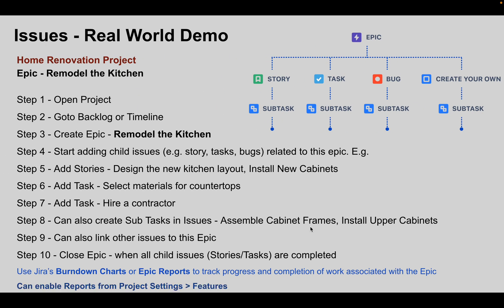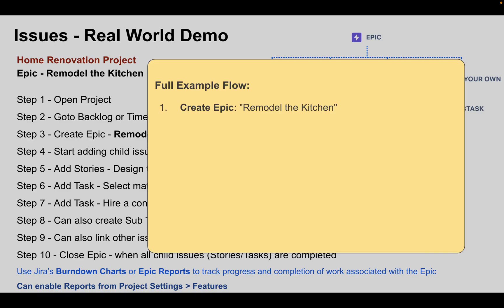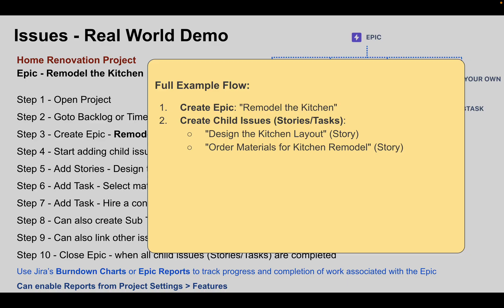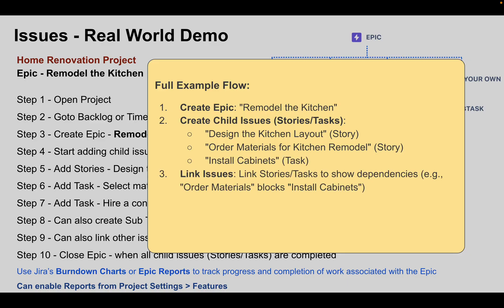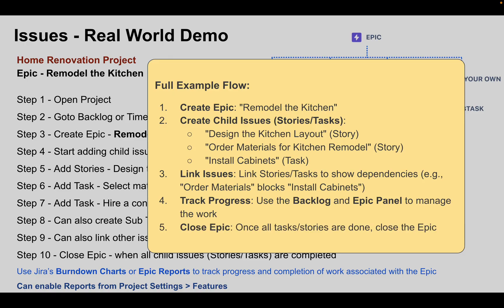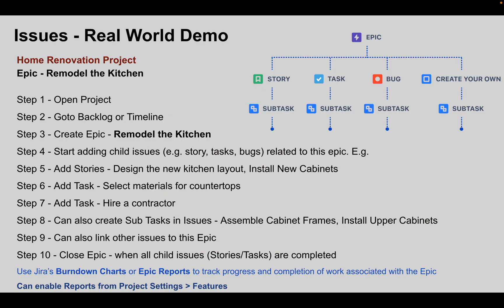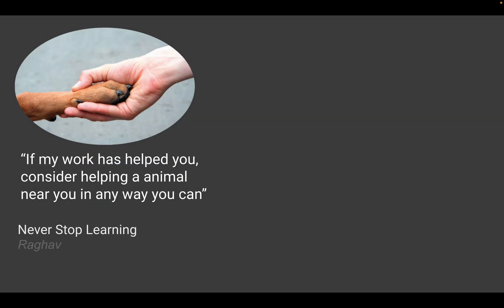This is how you work with issues in real world projects. The full flow: first create the epic, then add child issues — stories and tasks like design the kitchen layout, order material, install cabinets — add subtasks wherever required, link issues, add bugs when needed, track progress using the backlog or epic panel, and finally close the epic when everything is done. I hope this gives you a good real-world example — try it on your own. I'll see you in the next session. Thank you for watching and never stop learning.